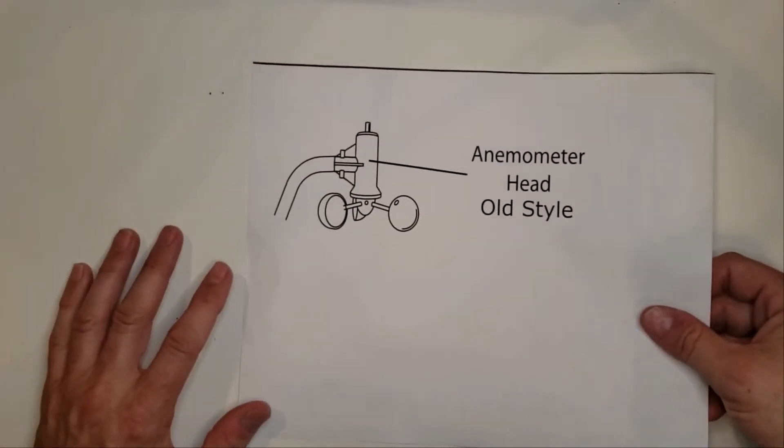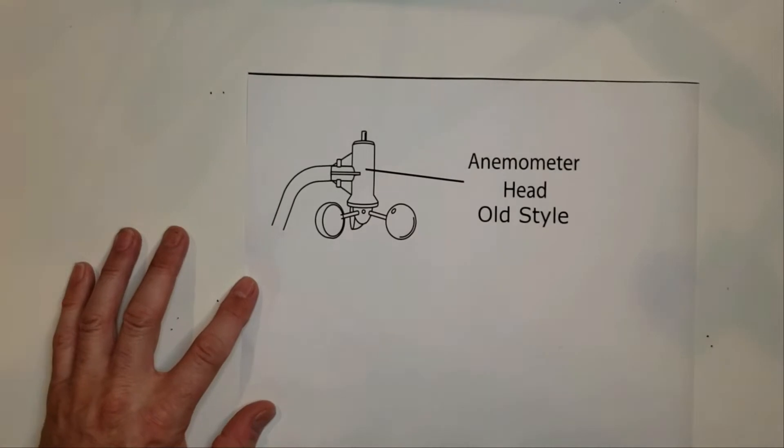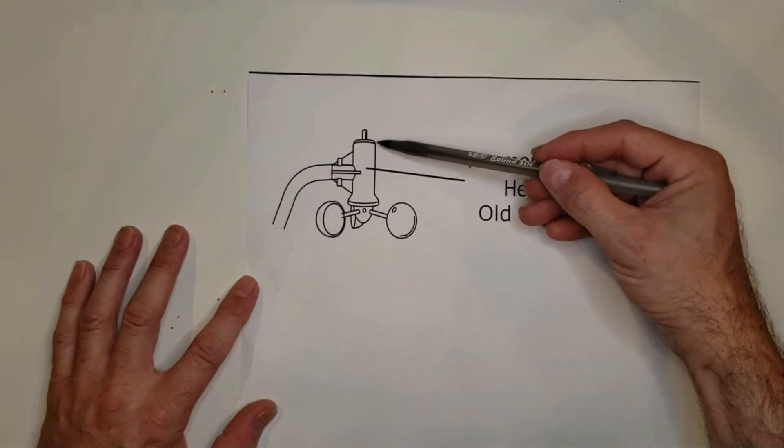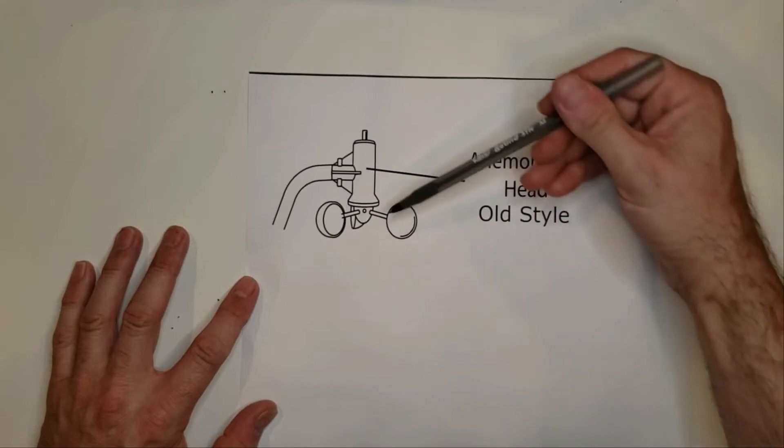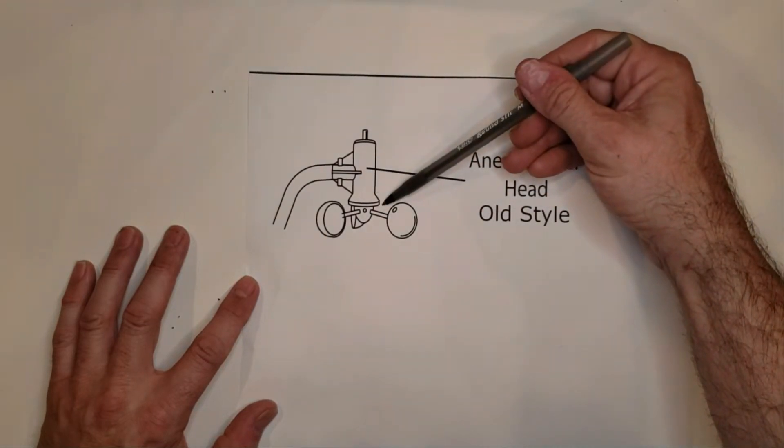There is an old style anemometer. It looks like this. The old style anemometer has a straight body from the top down to the very bottom and then it flares out.